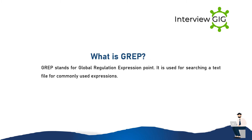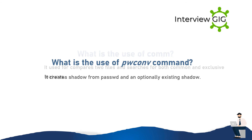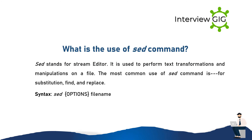What is GREP? GREP stands for Global Regular Expression Print. It is used for searching a text file for commonly used expressions. What is the use of the comm command? It is used to compare two files and search for both common and exclusive features. What is the use of the sed command? sed stands for Stream Editor. It is used to perform text transformations and manipulations on a file. The most common use of the sed command is for substitution, find, and replace. Syntax: sed [options] filename.